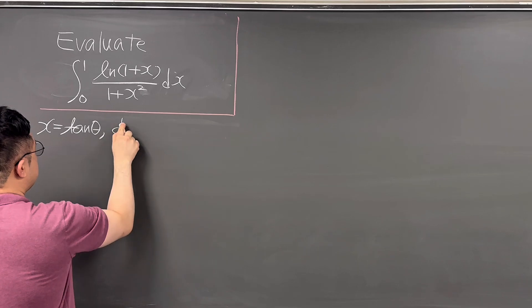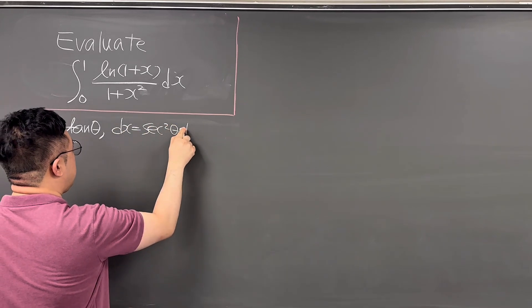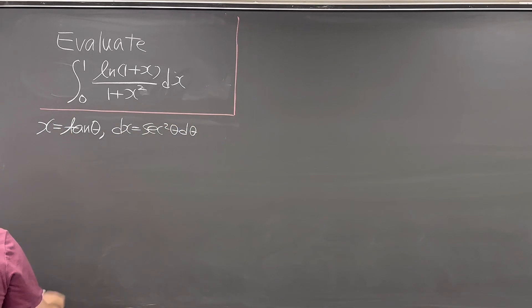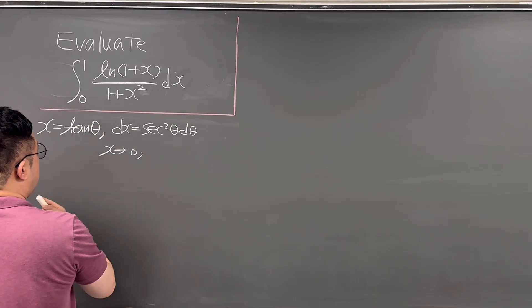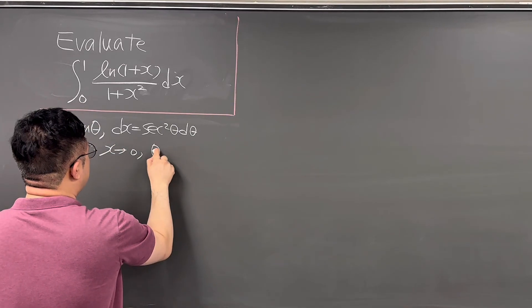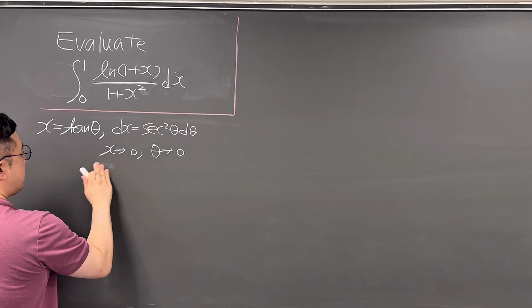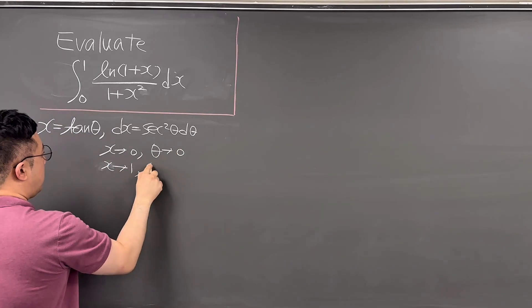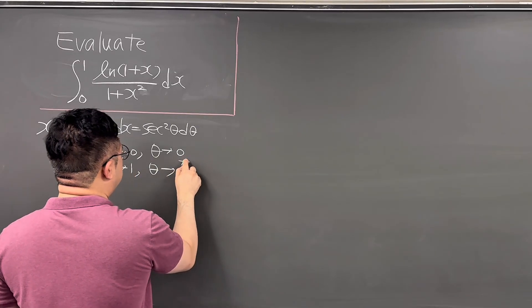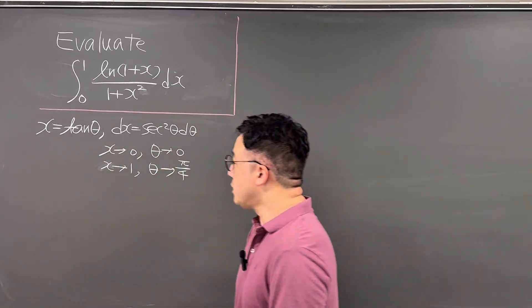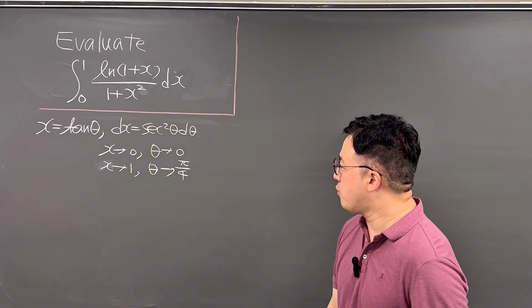Then dx has to be the same as secant squared theta d theta. Then when x is going to 0, theta is going to 0. And when x is going to 1, theta is going to pi over 4. So the lower bound and the upper bound should be changing from 0 to pi over 4.